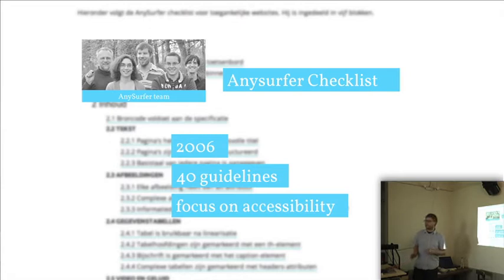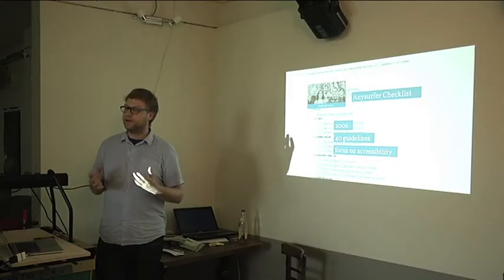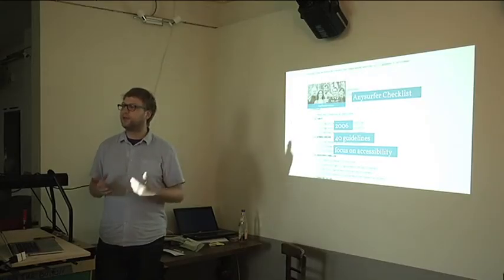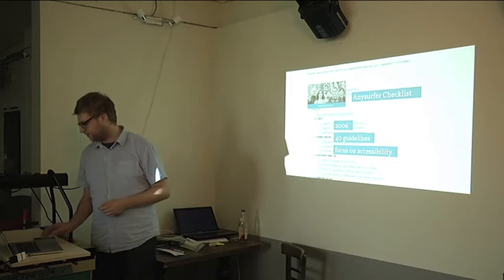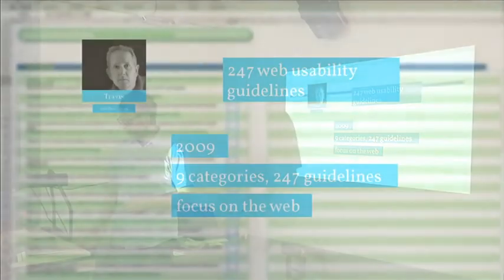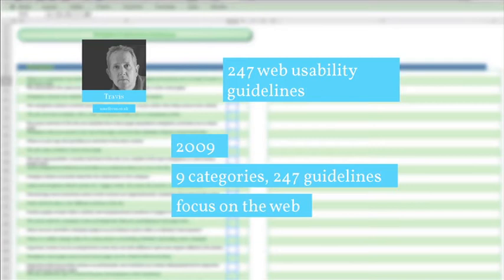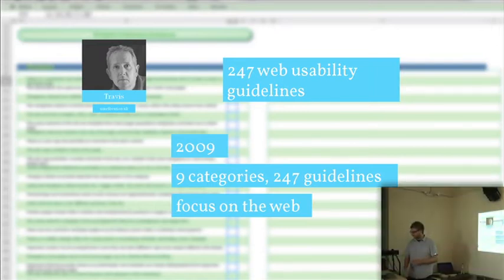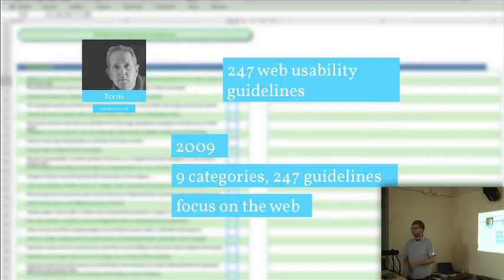One of the reasons that I use it already is, first of all, we are accredited at our company to deliver websites with an AnySurfer label. Because we work a lot for the government, and then you need these accessibility guidelines. Another source that I already knew was userfocus.co.uk, with the CEO David Travis. In 2009, they published a checklist with 247 items on it, spread across nine categories. You can download it — it's just an Excel file, fill it in, and see what comes out.